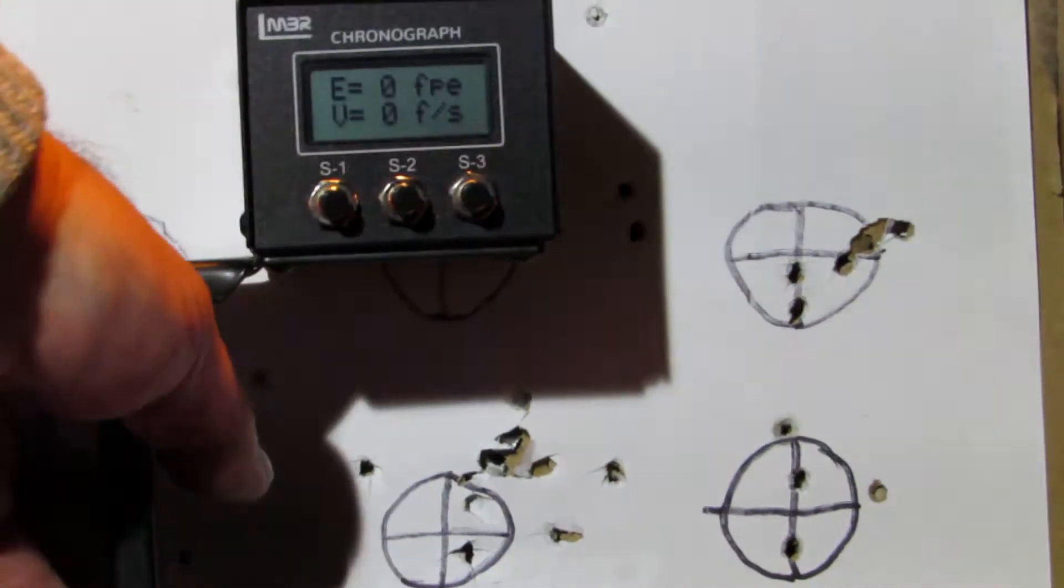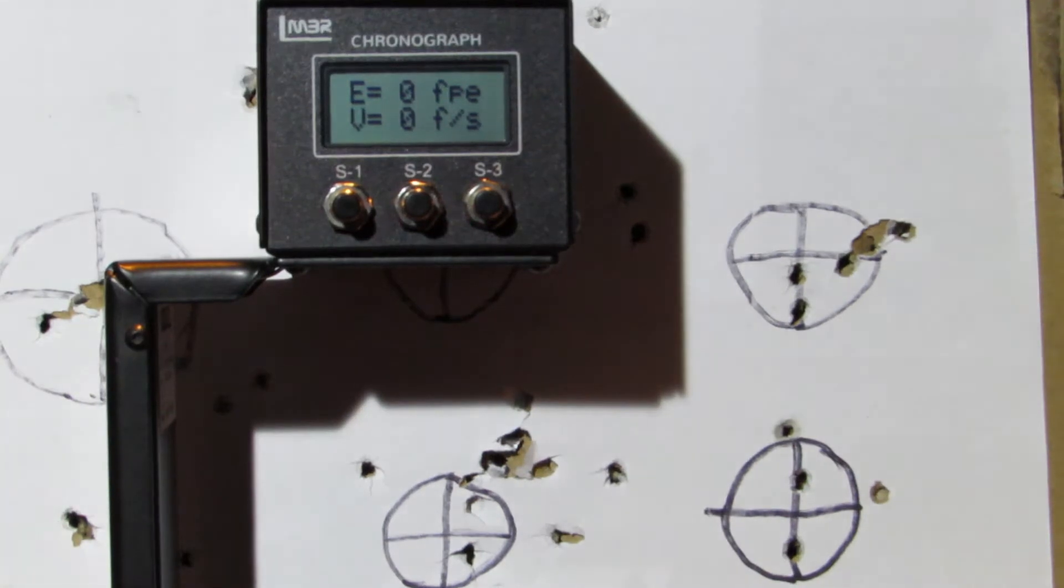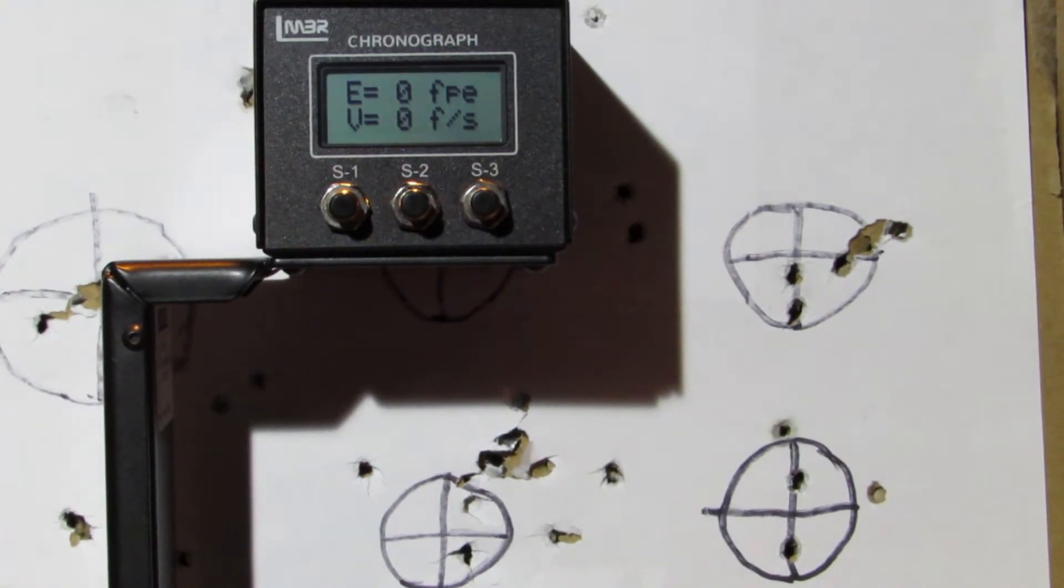OK, we're now going to set the chrony up for the next pellet, which is 8.4 grain.